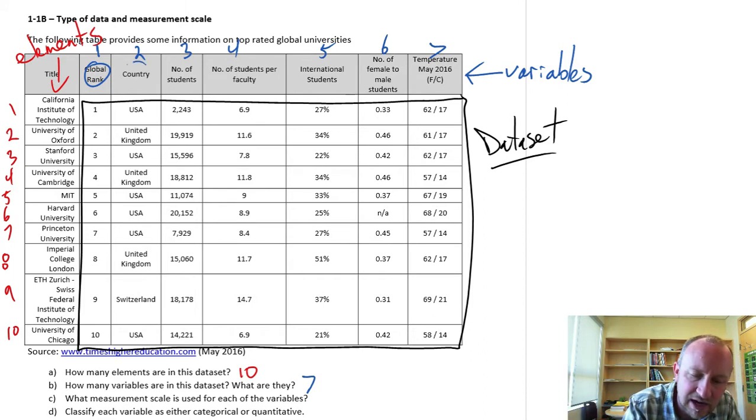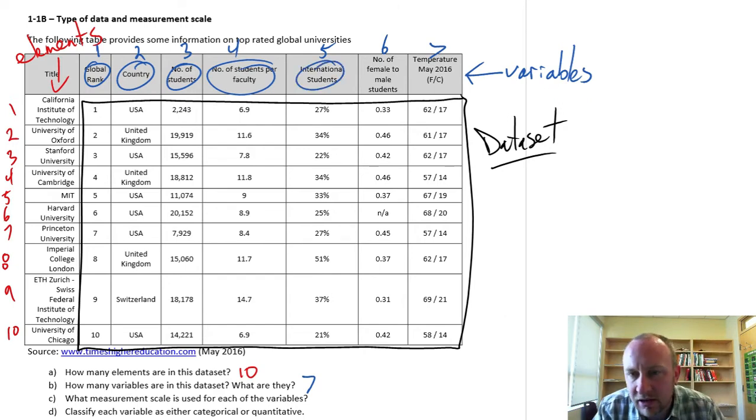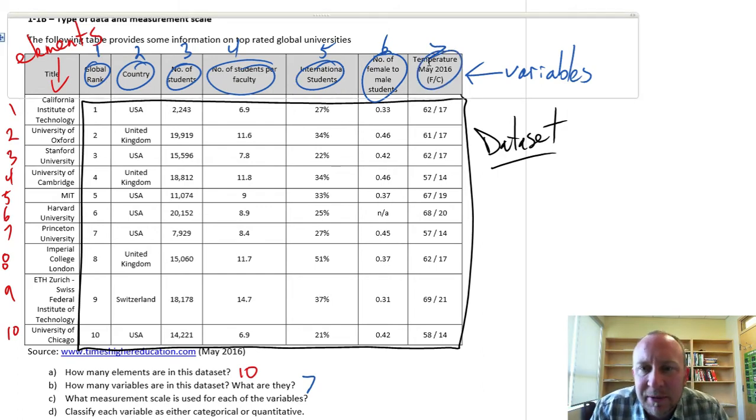So I have the global rank, country, number of students, number of students per faculty, the percentage of the student population that are international. Perhaps one of the most important characteristics, the number of female to male students. Maybe that's how you want to choose what university you go to. Or perhaps equally important, average temperature in that particular city. So here we have our seven variables and the names of each of them.